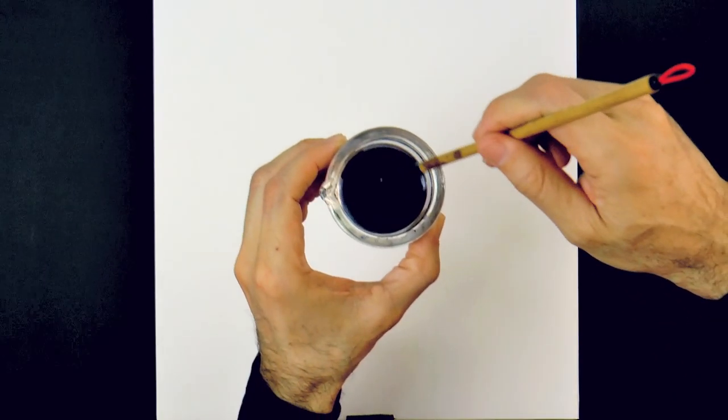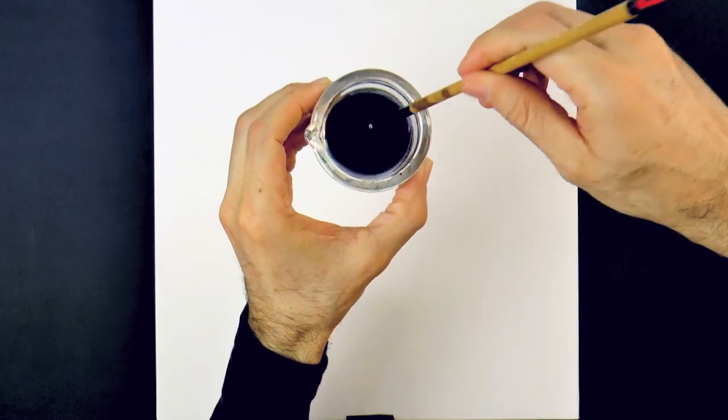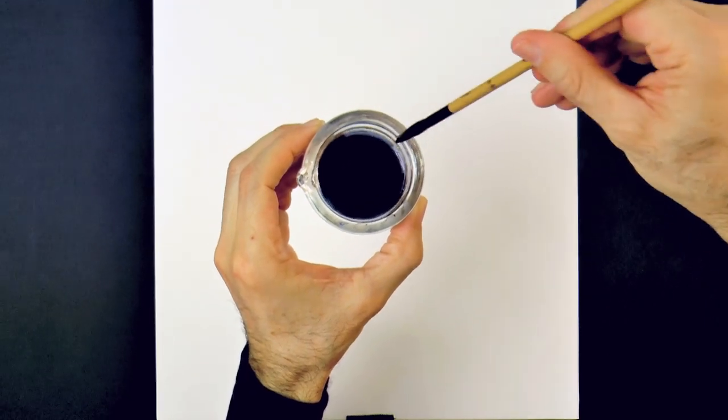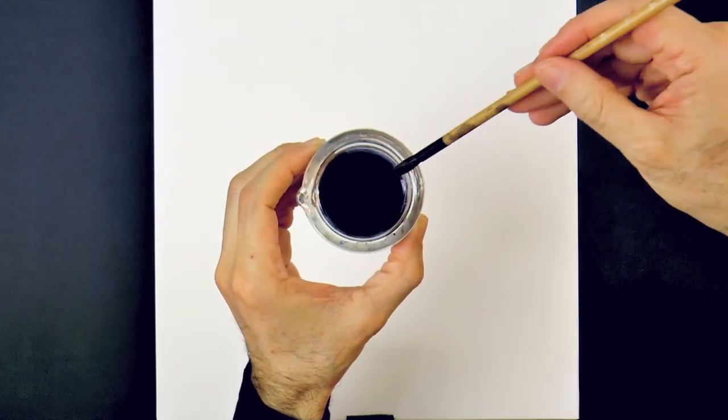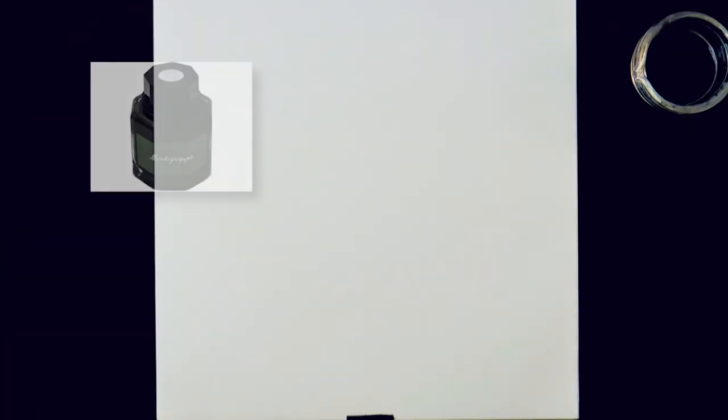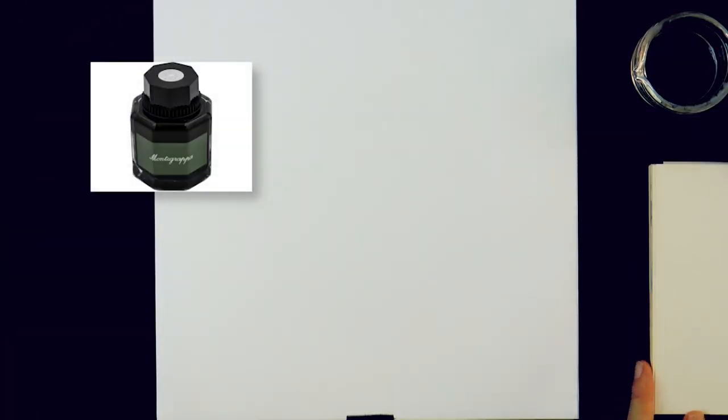Hello my friends and welcome to another Tuesday of tutorial! I am Leonardo Pereznieto and today I'll begin the sketch with an oriental brush using Montegrappa Fountain Pen black ink diluted in water.